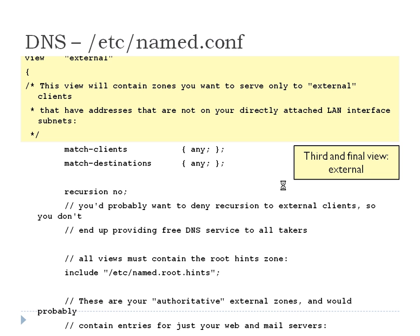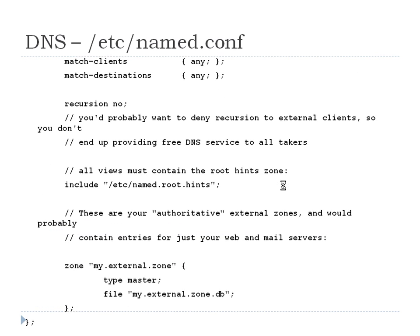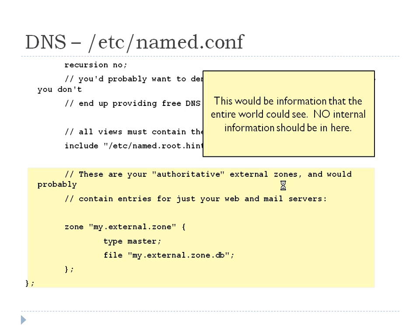Your external view is the last view. It says: serve to external clients — addresses that are not on your directly attached LAN interfaces. To simulate this in the lab, you'd usually use a router and put people on a different network to see what resolves. They give you a warning: it contains entries just for your web and mail servers. You'd have to be very careful about what you put in the external zone — this is what you're showing to everybody. You don't want records about your SQL server, the boss's machine, or a complete zone transfer that footprints your entire network.